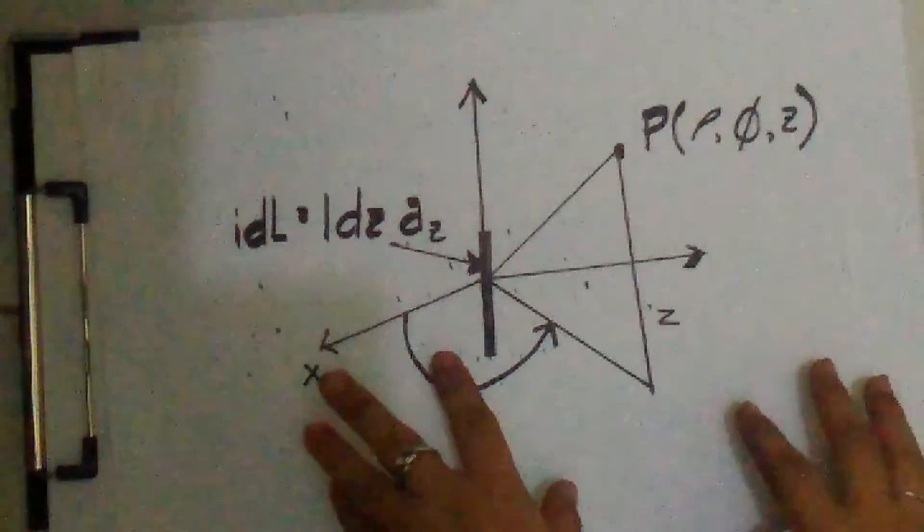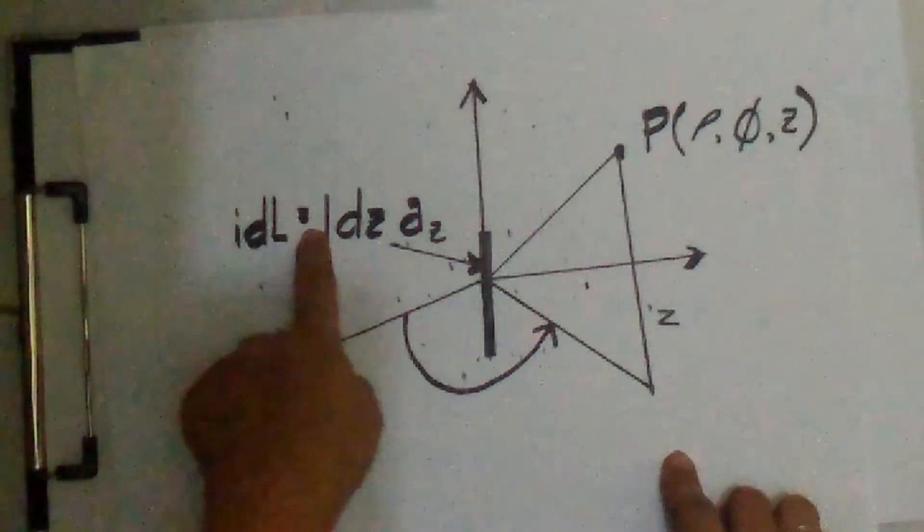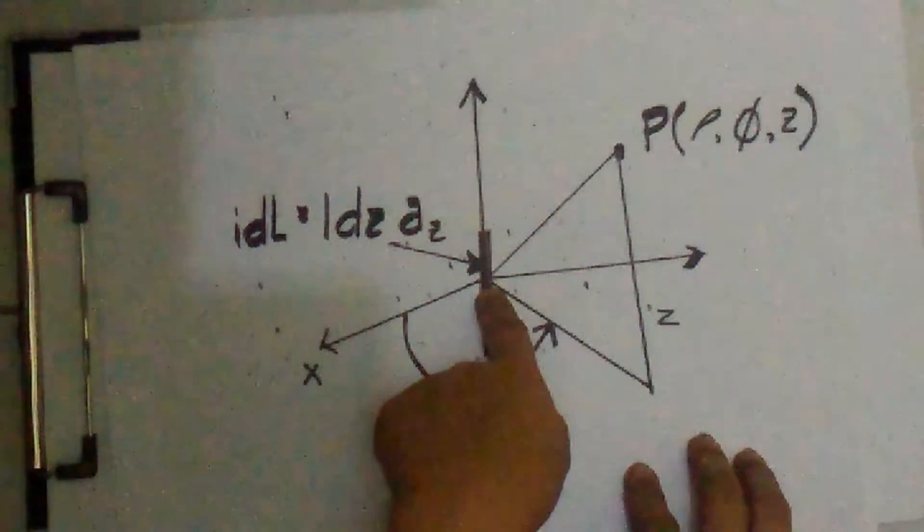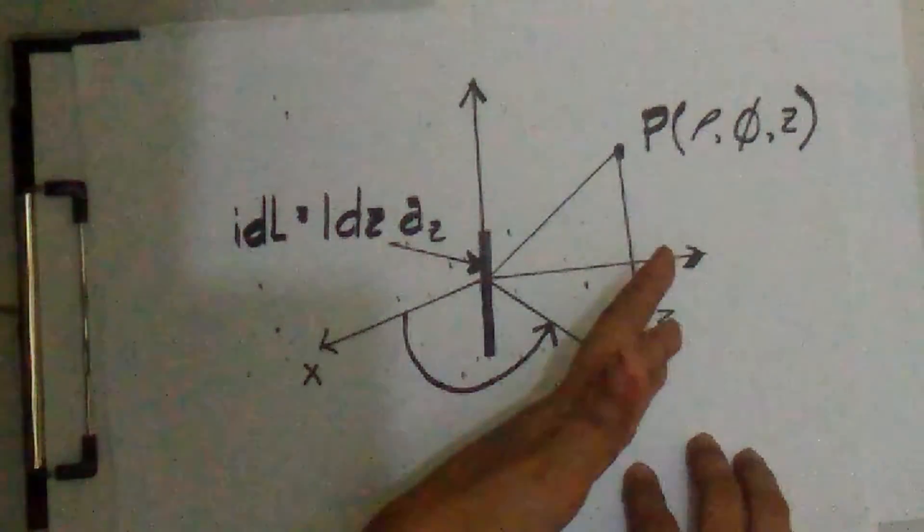In this figure, the differential current at the origin establishes the differential vector magnetic potential field.